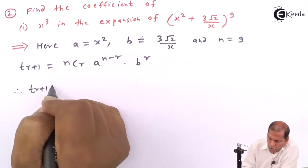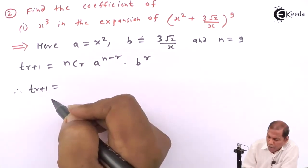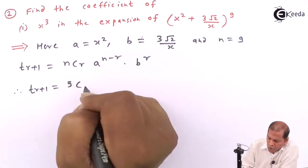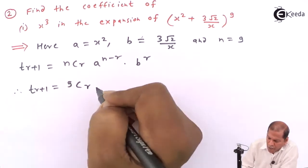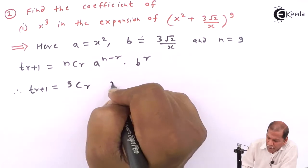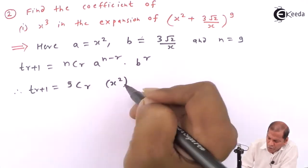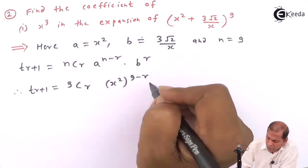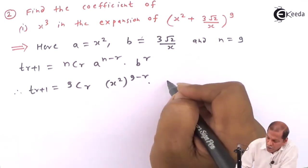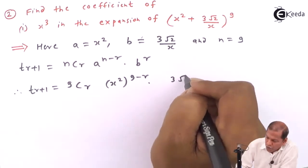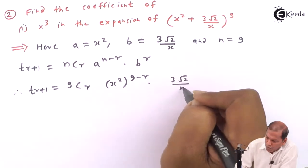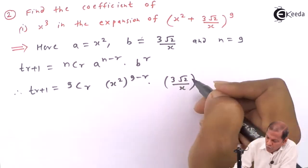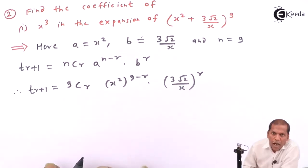Therefore T(r+1) is equal to — for n we substitute 9 — so we have 9Cr, for a we write (x squared) raised to (9 minus r), into (3√2 upon x) whole bracket raised to r.